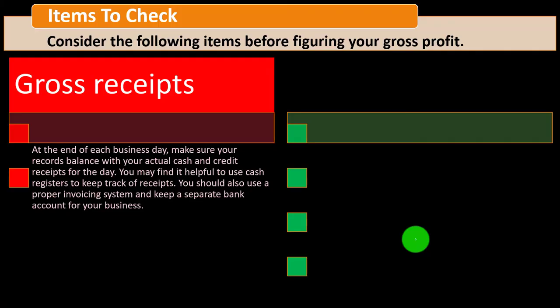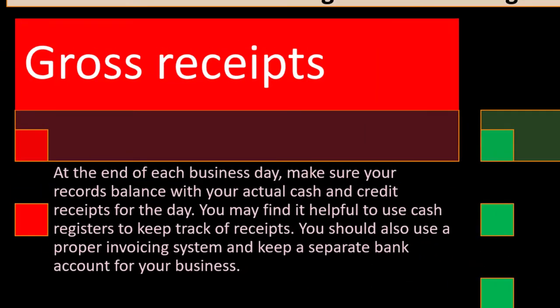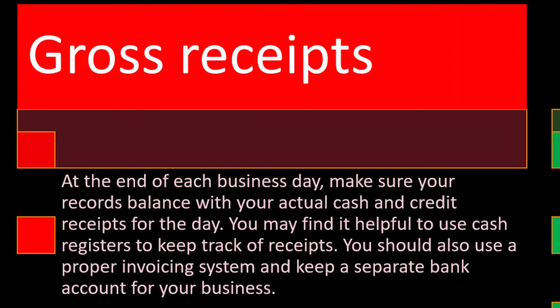Items to check before figuring gross profit. For gross receipts: at the end of each business day, make sure your records balance with your actual cash and credit receipts. Use cash registers to track receipts, use a proper invoicing system, and keep a separate bank account for your business — separating business and personal. These bookkeeping practices make your tax reporting much easier.